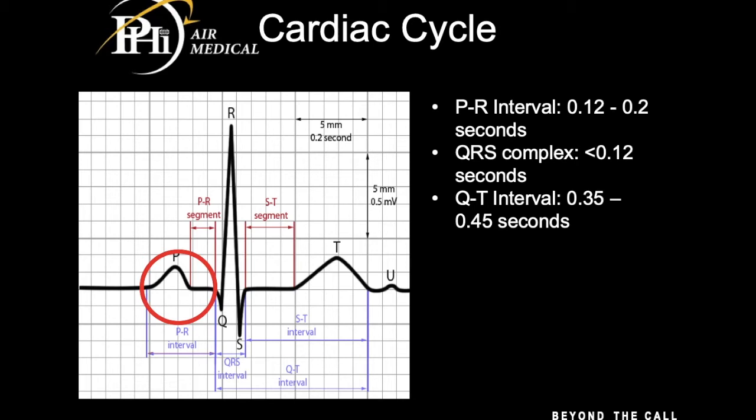When the SA node fires, producing the P wave from atrial depolarization, that signal gets transmitted down to the AV node. The AV node should hold on to it for about 0.12 to 0.16 seconds before sending it off to the ventricles. If the AV node is taking too long — because it's a little weak — we would see something like a first degree heart block, or we could see no PR interval at all, meaning some other type of block is going on.